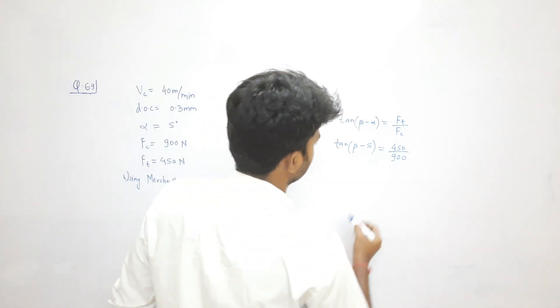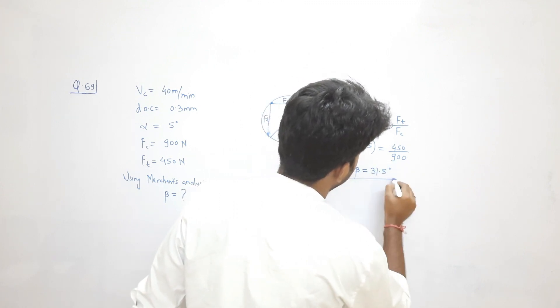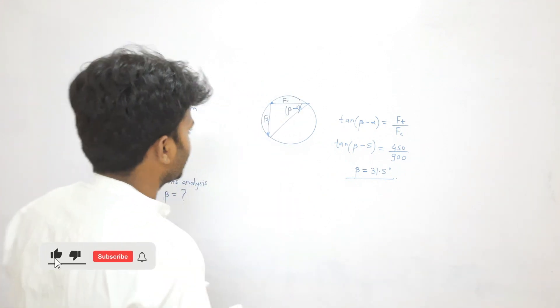Solving this, we get beta equals 31.5 degrees. This is my friction angle, so B is the correct option.